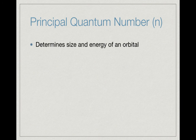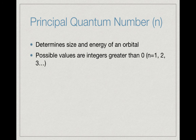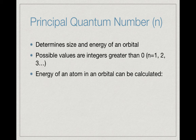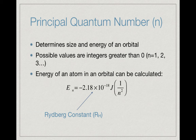Let's take a look at each of these quantum numbers in detail. n is what determines the size and energy of an orbital—that's the reason it's called the principal quantum number. Its allowable values are integers greater than zero: 1, 2, 3, 4, etc. We can calculate the energy of an electron in an orbital using the Rydberg equation: E_n equals negative 2.18 × 10⁻¹⁸ joules times 1 over n squared. The 2.18 × 10⁻¹⁸ is called the Rydberg constant, and this gives us the energy of any electron in an orbital with principal quantum number n.